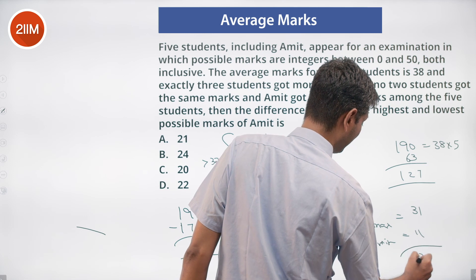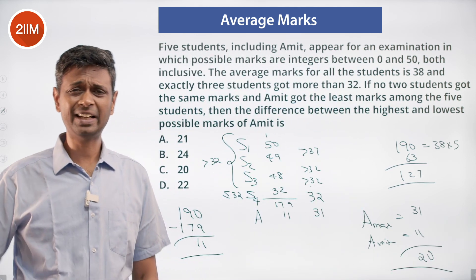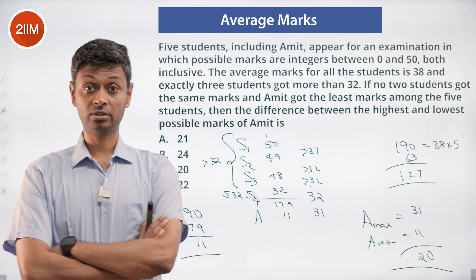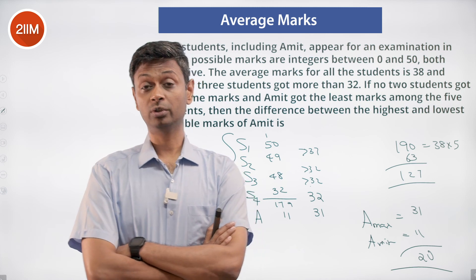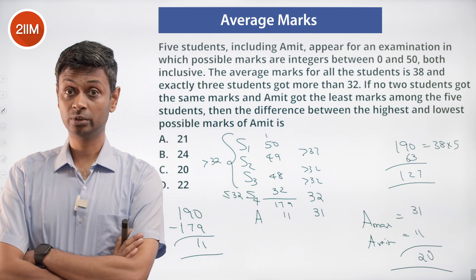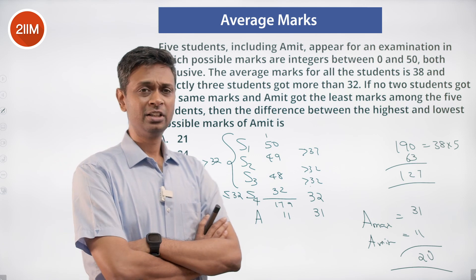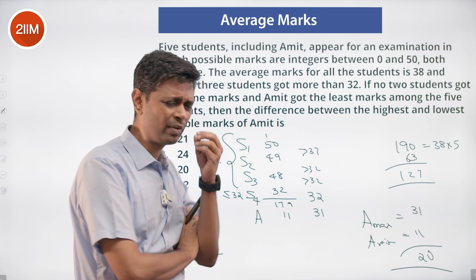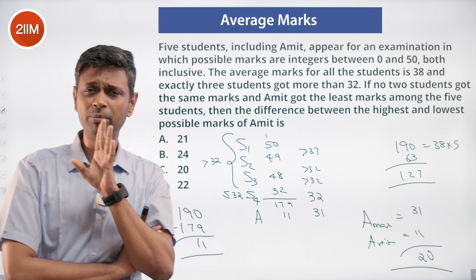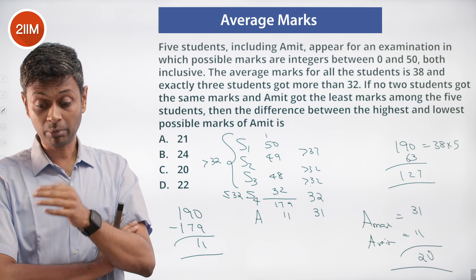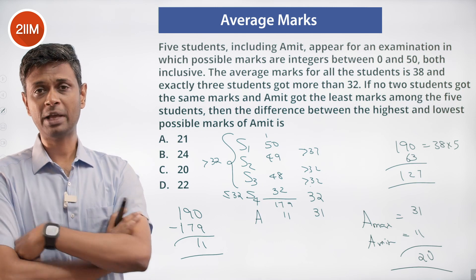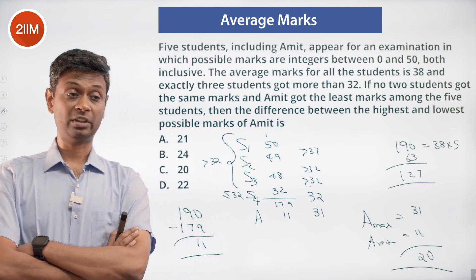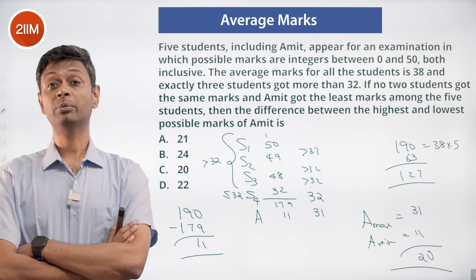The difference between Amit's maximum and minimum is 31 − 11 = 20. To recap: the average is 38, so the total is 190. Exactly three students got more than 32, so the fourth is less than or equal to 32. For Amit's maximum, s4 takes its highest value of 32, making Amit 31. For Amit's minimum, the other four are 50, 49, 48, 32 — summing to 179 — leaving Amit with 11. The answer is 20.